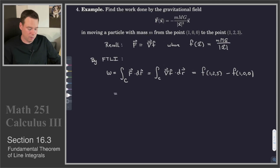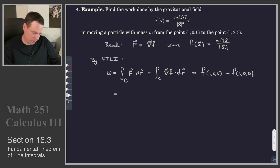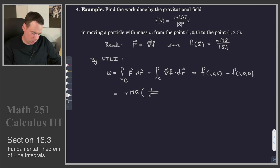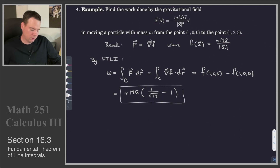This is very nice because it tells us we don't have to worry about a parametrization — we just need to know the potential at the terminal point and the potential at the initial point, and take their difference. So this is going to be little m times big M times big G, and then the other part of little f is 1 over the square root of 1 squared plus 2 squared plus 3 squared, so that's 1 over root 14, minus 1 over 1. That is the work involved in having this gravitational field move a particle from the point (1, 0, 0) to the point (1, 2, 3).